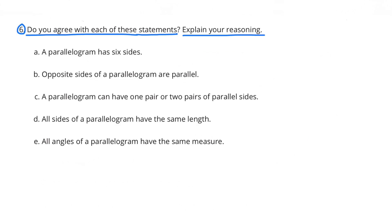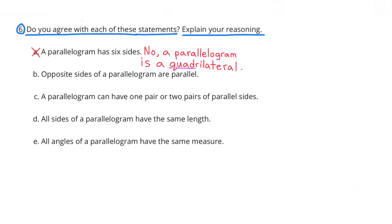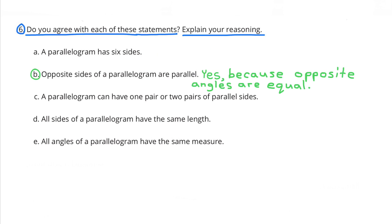Number 6: Do you agree with each of these statements? Explain your reasoning. A: A parallelogram has 6 sides. No, because a parallelogram is a quadrilateral that has 4 sides. B: Opposite sides of a parallelogram are parallel. Yes, because opposite angles are equal, and if opposite angles are equal, the opposite sides will be parallel.